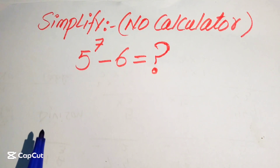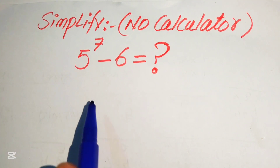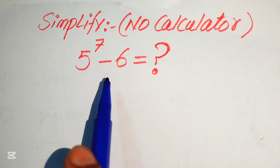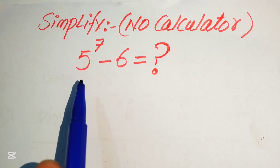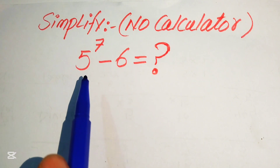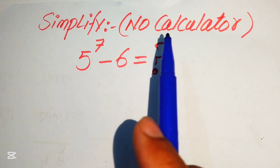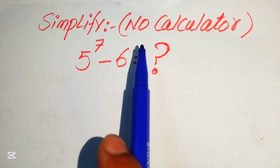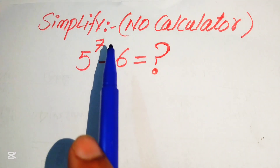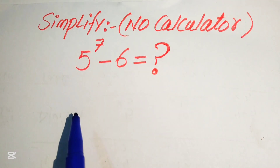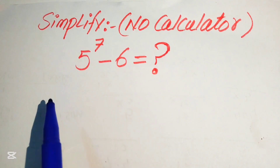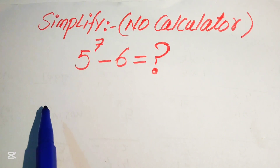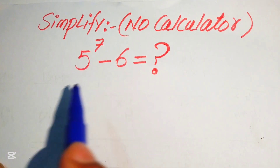Hello everyone. How to simplify this nice algebraic expression: 5 to the power of 7 minus 6. We write this expression into simplified form. Note that a calculator is not allowed in this problem — we can solve it without a calculator, and we will show all of the working on this page.